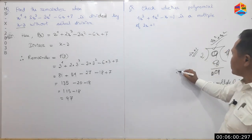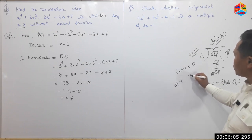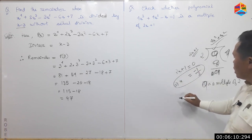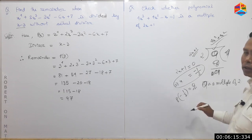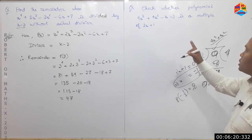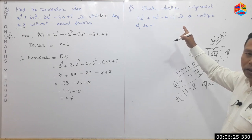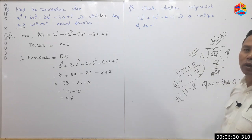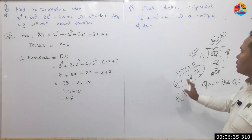The divisor is twice x plus 1, set equal to 0. Then x is equal to minus 1 by 2. This is the remainder theorem. P of minus 1 by 2 is equal to 0. Then c is equal to 4x cubed. 4x cubed plus 4x cubed minus x is equal to a multiple of twice x plus 1.